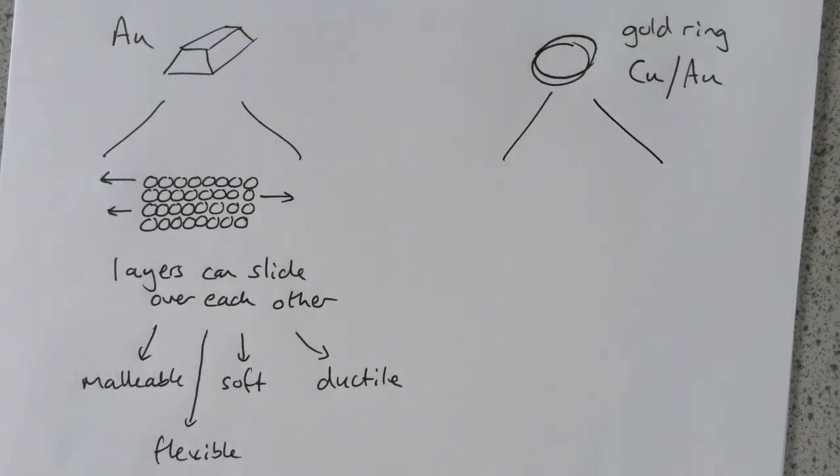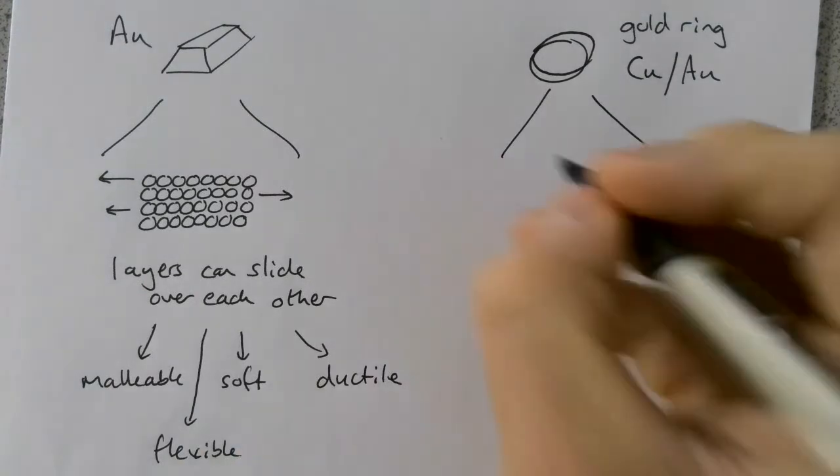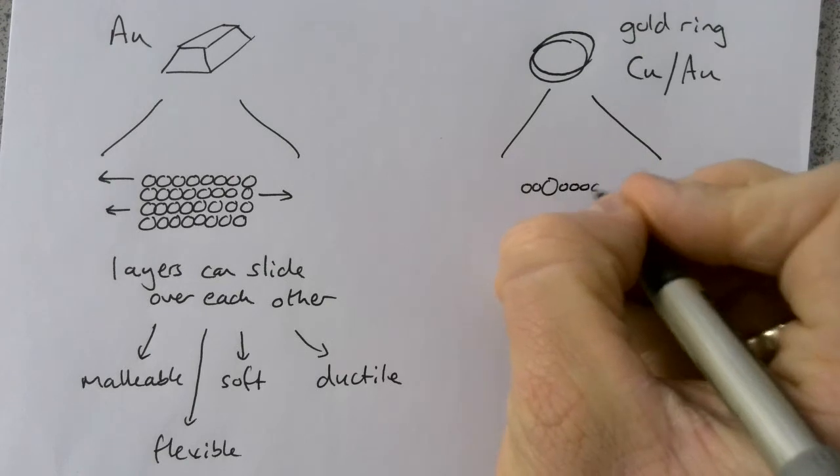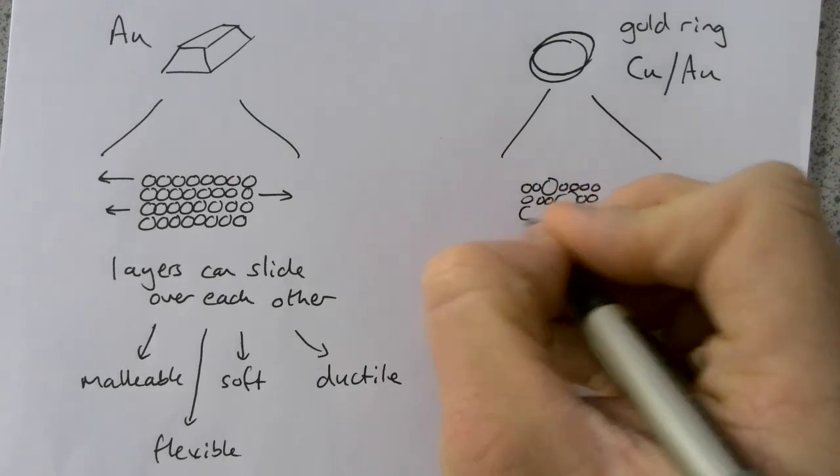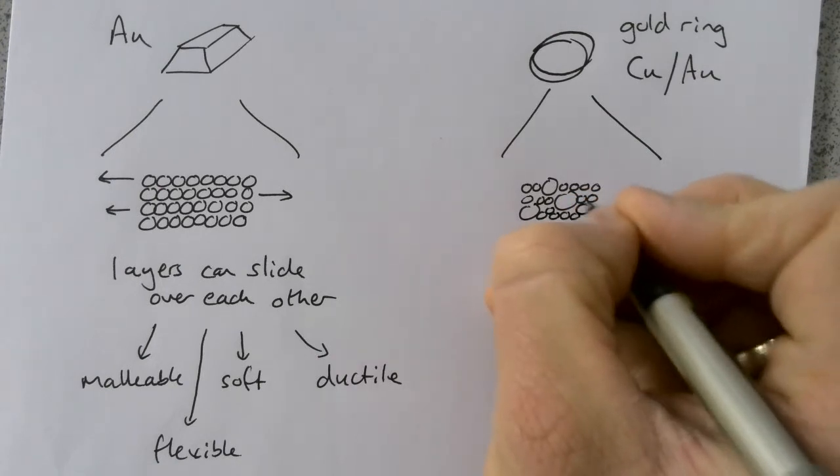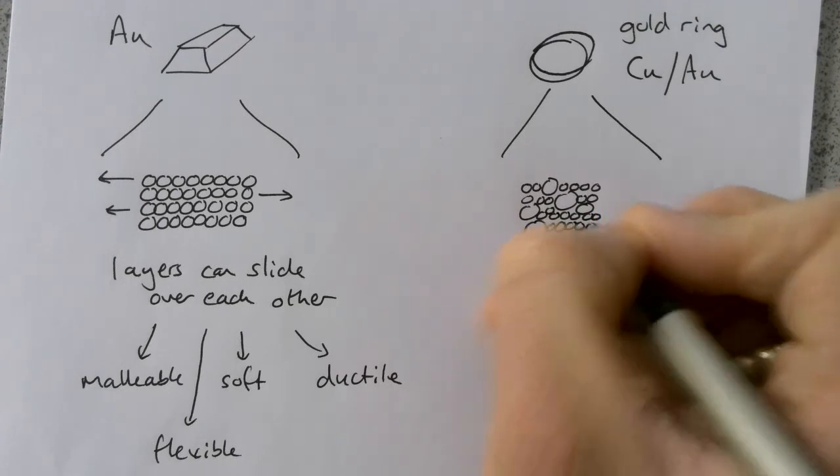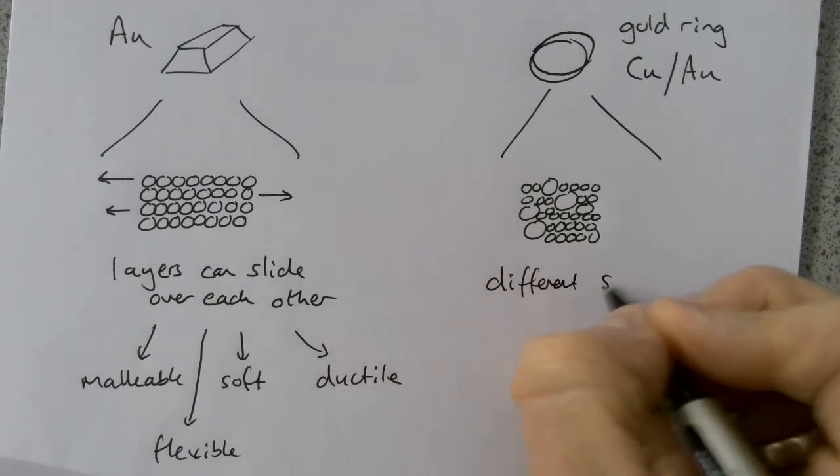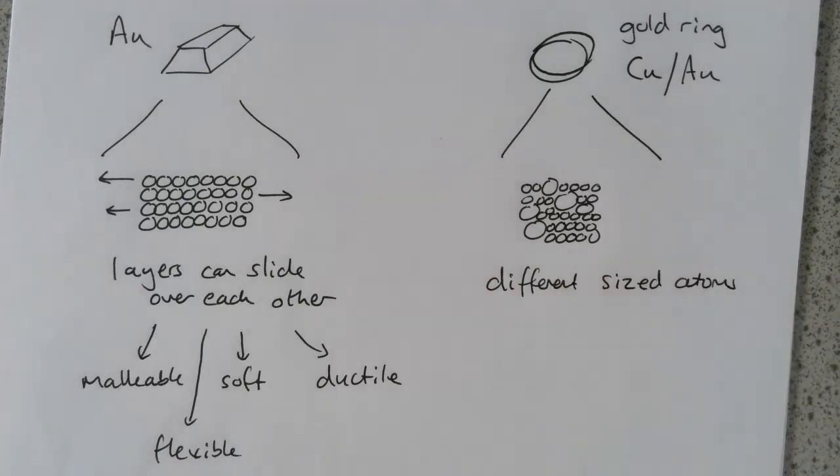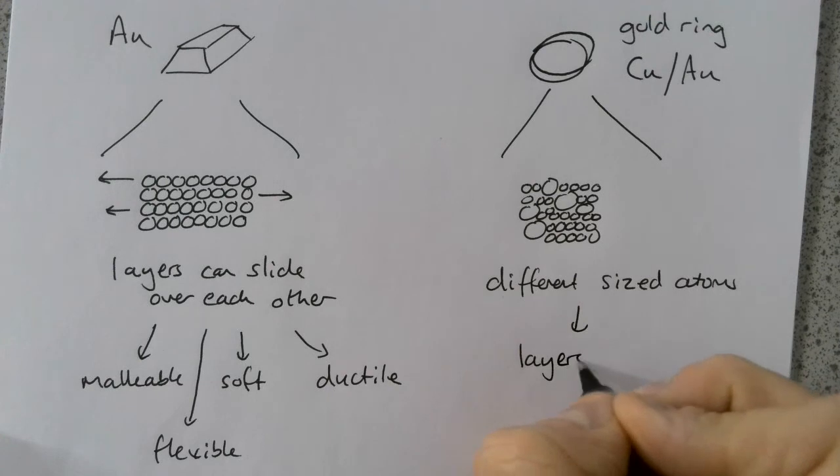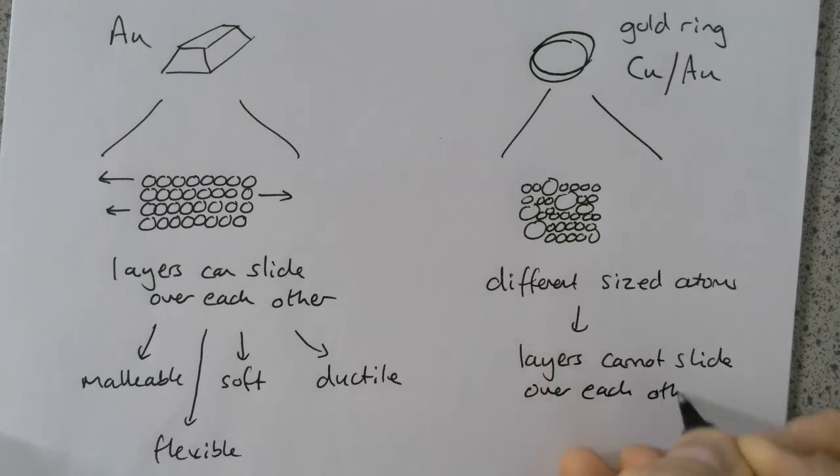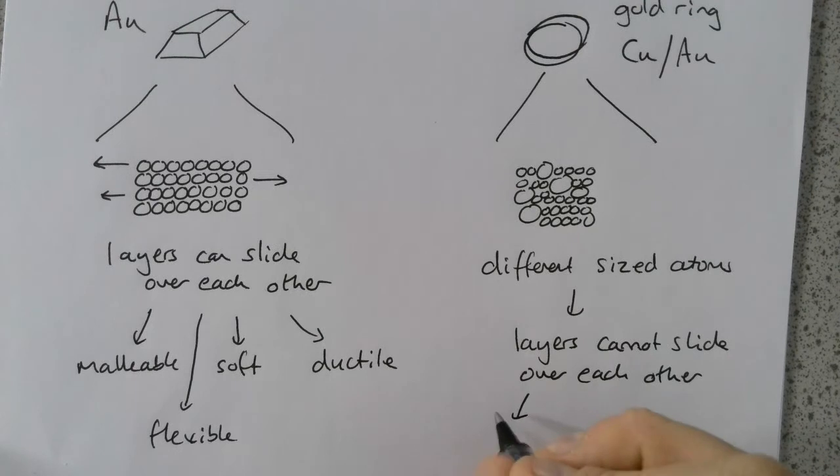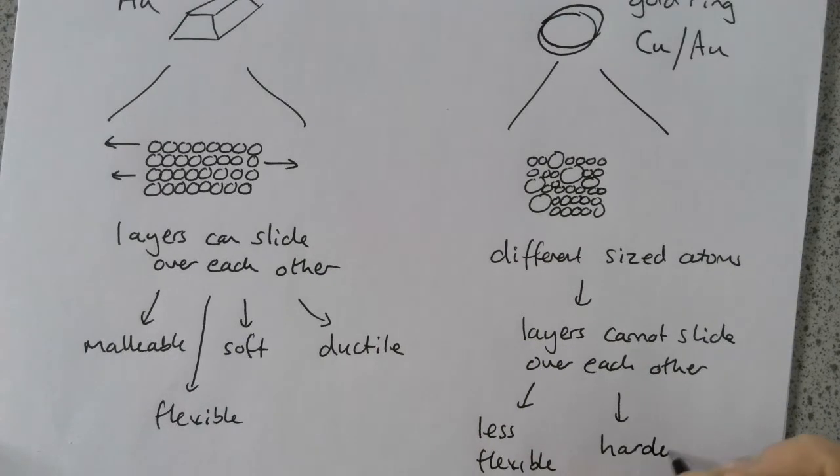The structure is quite different. Because copper and gold atoms are different sizes, we don't have this regular structure anymore. What we have is different sized atoms or ions that disrupt this structure. We've got different sized atoms or ions. As a result of that, the layers cannot slide. If they can't slide over each other, the alloy is less flexible, and it's usually harder than the pure metal.